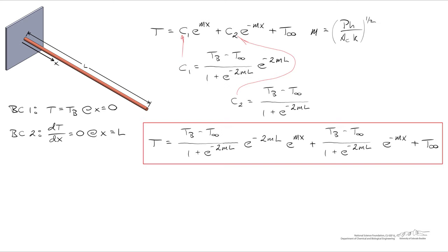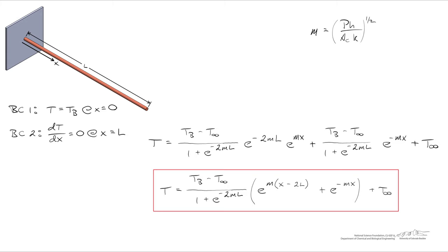and we've specified the flux at x equals L. And we said that that flux was 0, because we're assuming that the tip of this extended surface is insulated, or adiabatic. And here I've taken a moment to tidy up the expression a little bit.